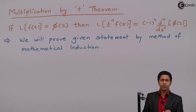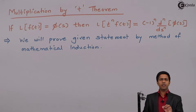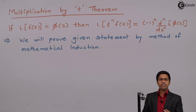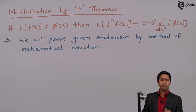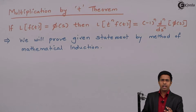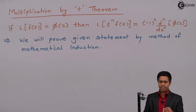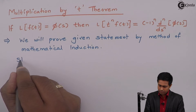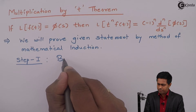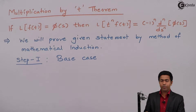In the base case, we prove the given statement is true for the first natural number, which is n equal to 1. In the inductive step, we assume the statement is true for any natural number and prove it is true for the next natural number. After these two steps, we can infer it is true for all natural numbers. Let's start with step number one, the base case, where we prove it is true for n equal to 1.